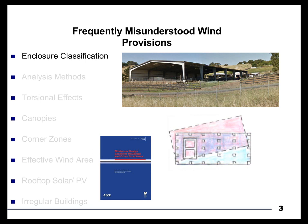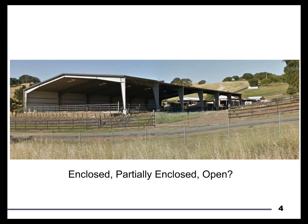To get started, I'd like to introduce a sample building. It's a relatively open agricultural type of structure, steel-framed, and working within the ASCE 7 context, we have three options for classifying this building. The first would be Enclosed, the second would be Partially Enclosed, and the third is Open.